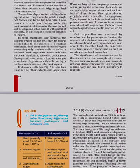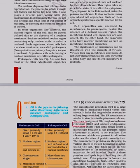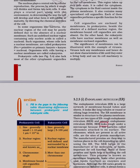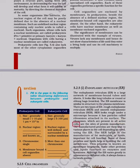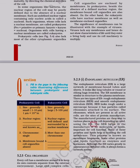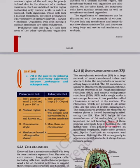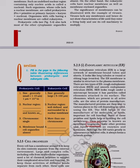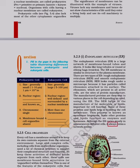5.2.5 Cell organelles: Some important examples of cell organelles are endoplasmic reticulum, Golgi apparatus, lysosomes, mitochondria and plastids. 5.2.5.1 Endoplasmic reticulum (ER): The endoplasmic reticulum is a large network of membrane-bound tubes and sheets. It looks like long tubules or round or oblong bags called vesicles. There are two types of ER — rough endoplasmic reticulum (RER) and smooth endoplasmic reticulum (SER). RER looks rough under a microscope because it has particles called ribosomes attached to its surface. The ribosomes, which are present in all active cells, are the sites of protein manufacture. The manufactured proteins are then sent to various places in the cell using the ER. SER helps in the manufacture of fat molecules or lipids important for cell function. Some of these proteins and lipids help in building the cell membrane — a process known as membrane biogenesis.